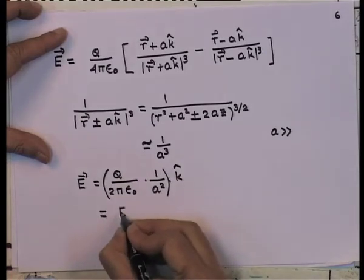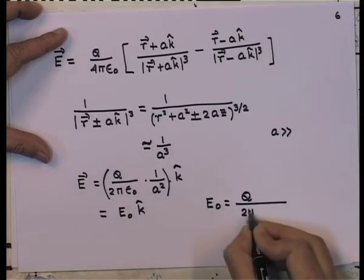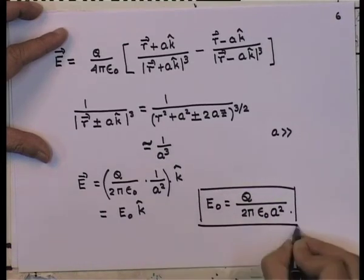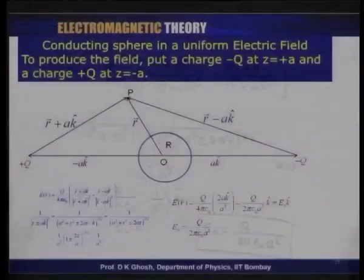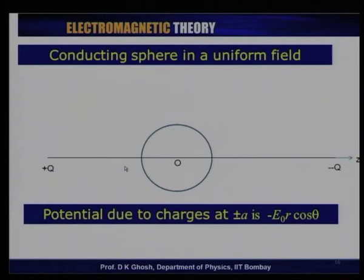This is equivalent to a constant electric field E₀ along the z-direction, where E₀ = q/(2πε₀a²). So we replace the original problem of a constant electric field with a charge −q at +a and a charge +q at −a, keeping these charges at very large distances from the origin, with the conducting sphere at the center.